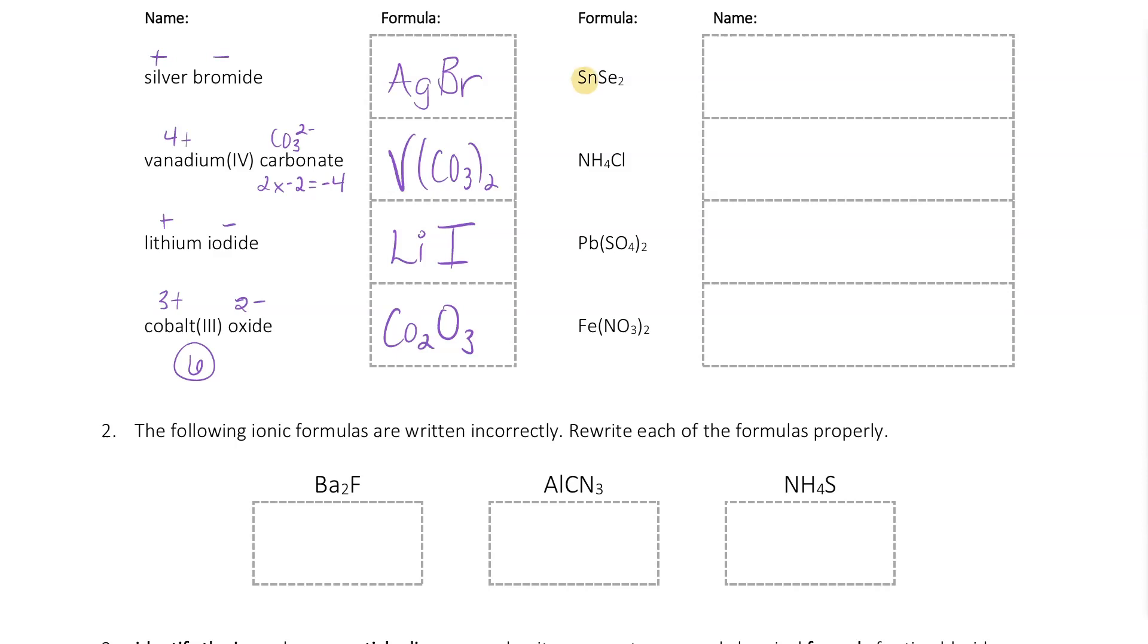we're going to use our negative ion to help us figure out what that charge is going to be. So I know this is going to be tin, so I'm going to go ahead and write that, and I'm going to figure out what that charge is based on the charge of the selenide ion or the selenium. It's going to have a charge of minus 2, so that means if I have 2 of those, the total negative charge is 4. I need a total of plus 4 to make this whole thing neutral. There's only one tin, so that tin has to be a plus 4 charge, so I'm going to go ahead and put my Roman numeral there. The selenium, I'm going to change to selenide, change that ending to IDE.